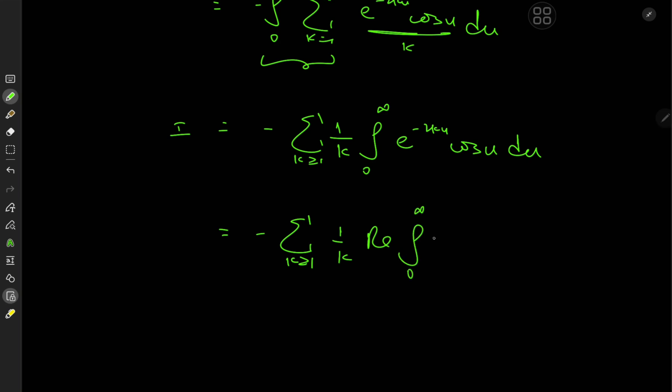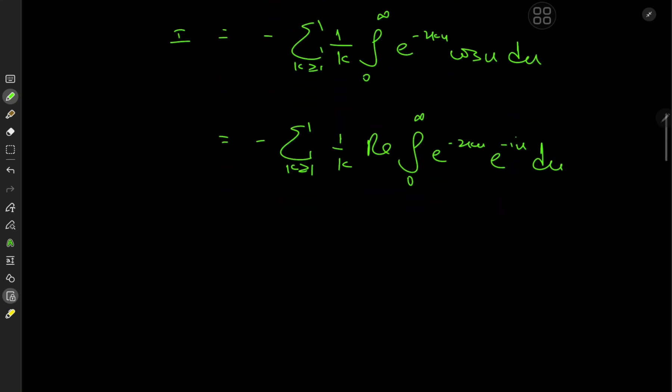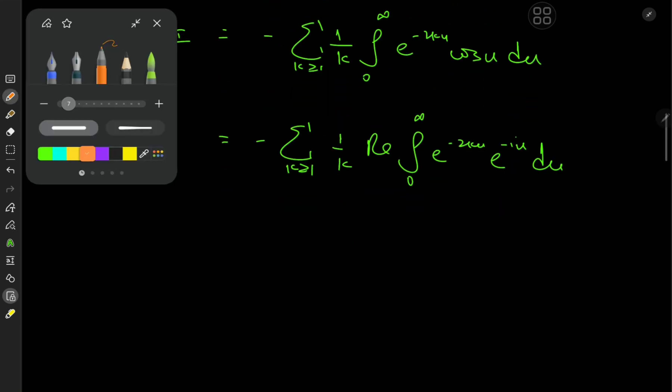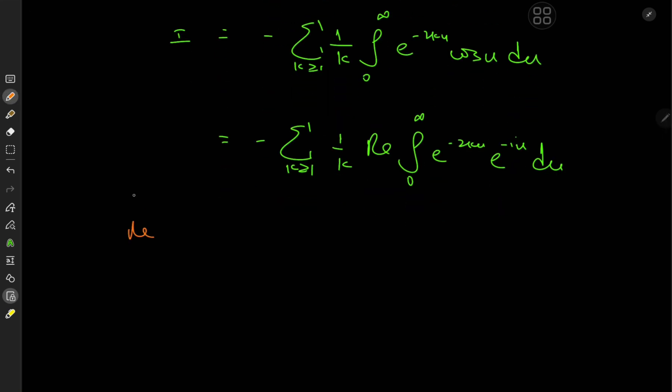So we have the real part of the integral from 0 to infinity, e^(-2ku) times e^(-iu) du, because we know from Euler's formula that the real part of e^(-iu) is cosine of u. So with that said, the remaining integration is quite trivial.